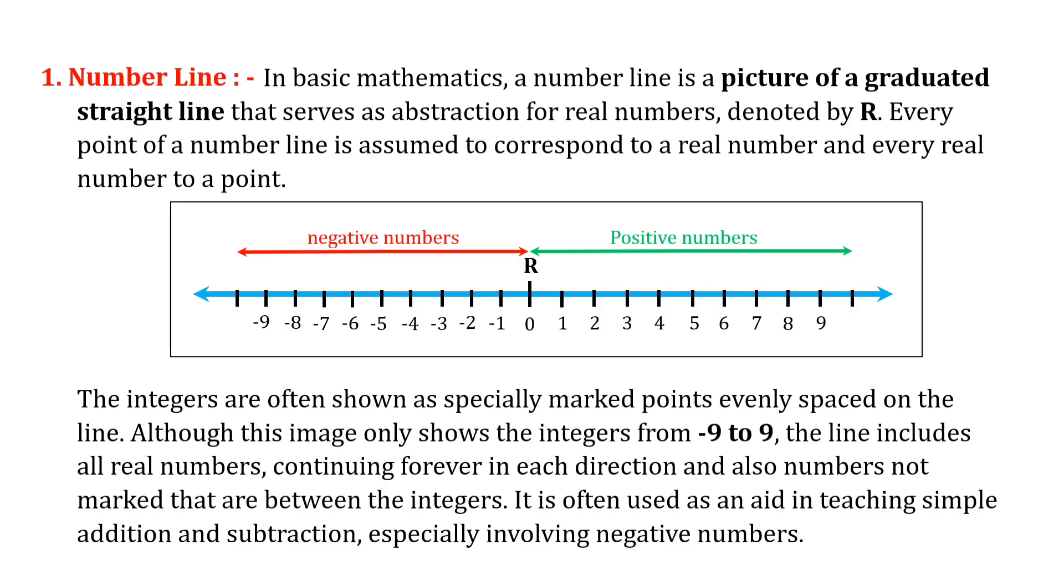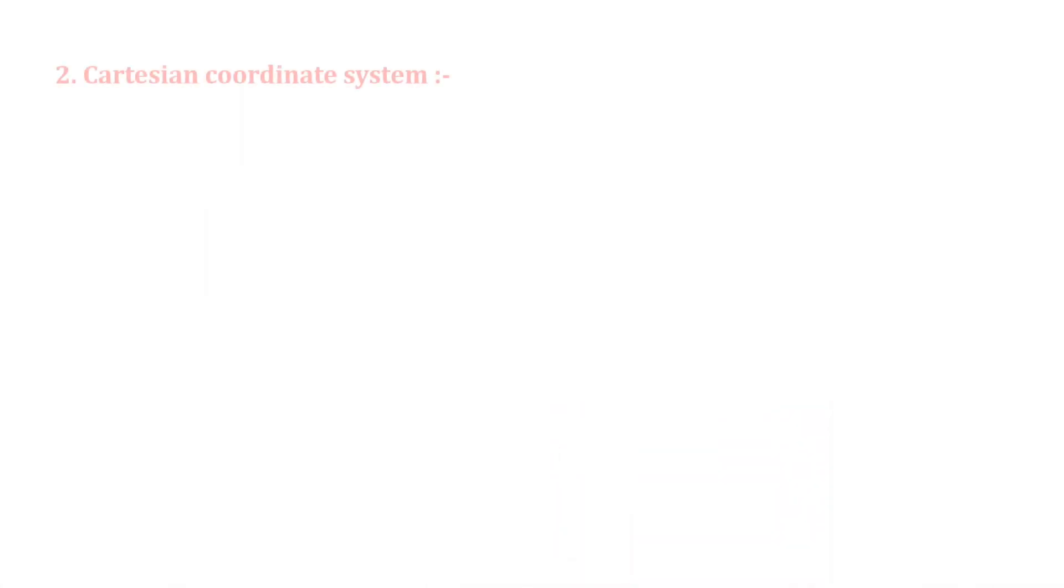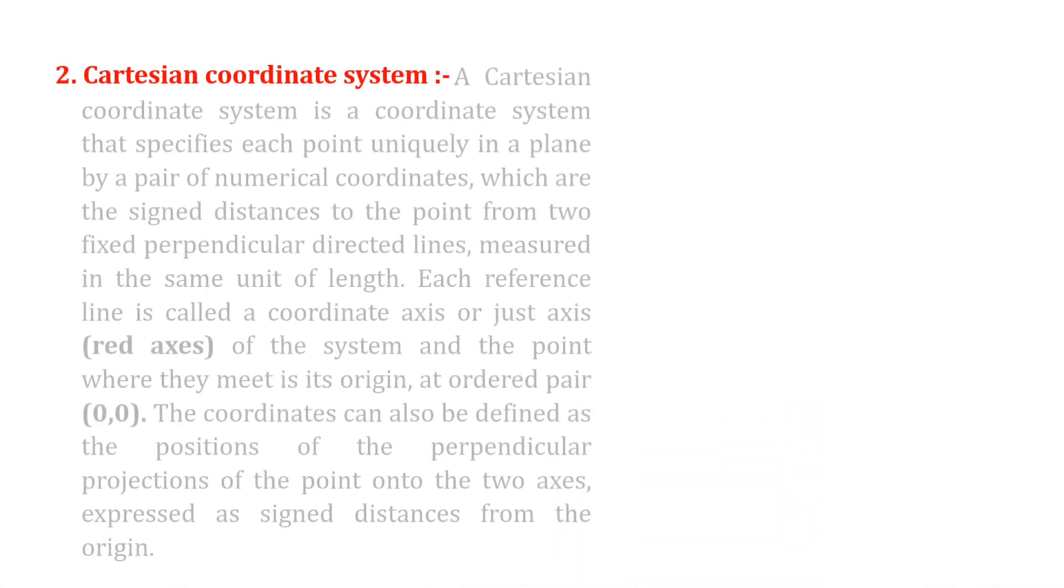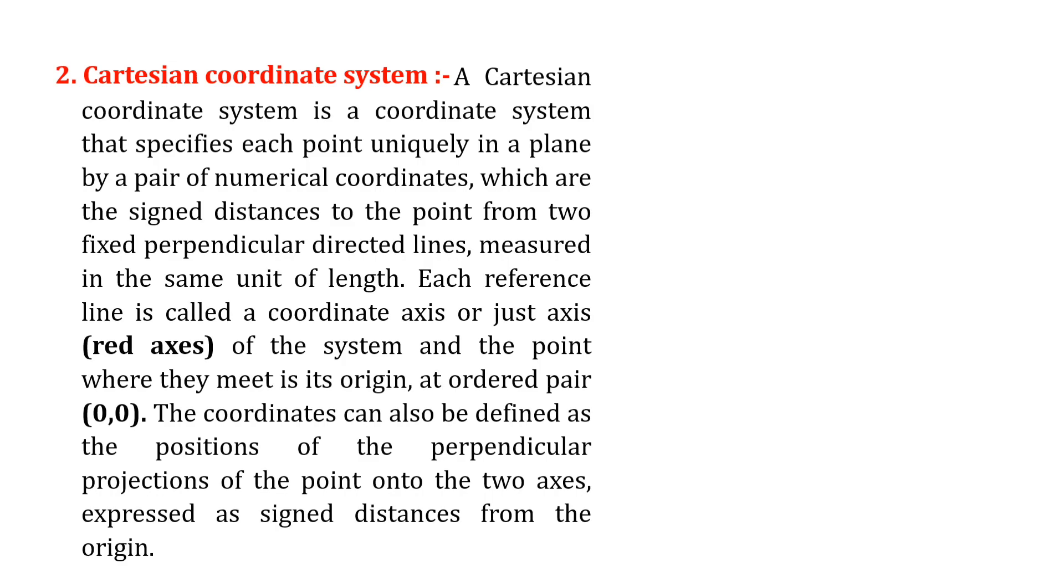Number two: Cartesian coordinate system. A Cartesian coordinate system is a coordinate system that specifies each point uniquely in a plane by a pair of numerical coordinates, which are the signed distances to the point from two fixed perpendicular directed lines measured in the same unit of length.